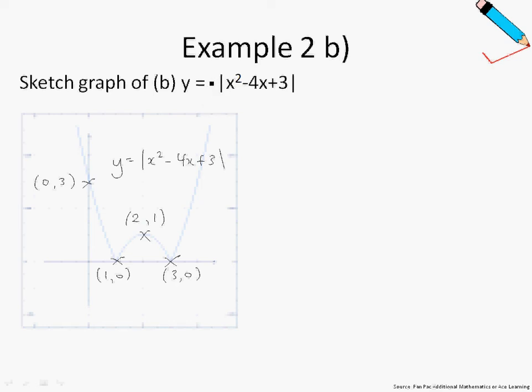When there is a negative sign in front of this entire graph, what happens is that the entire graph you see will reflect along the x-axis. The entire graph will reflect along the x-axis and you'll get this graph over here.